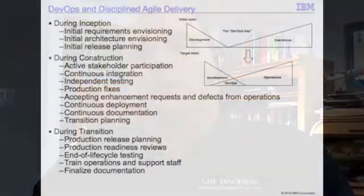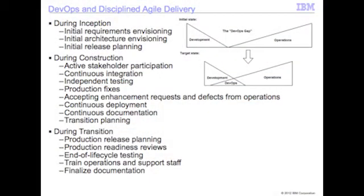A third aspect of Disciplined Agile Delivery is that it has DevOps baked right into the process. The basic idea with DevOps is the observation — very similar to optimizing the whole — that the IT environment has many aspects to it. We have some development teams, but more importantly, the vast majority of IT spend is almost always on the operations side. Two-thirds to 80, sometimes even 90%, of an IT budget actually goes to operating, maintaining, and supporting existing solutions, and not to new development.